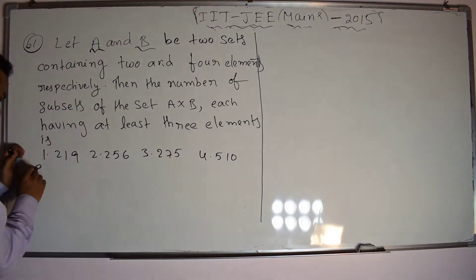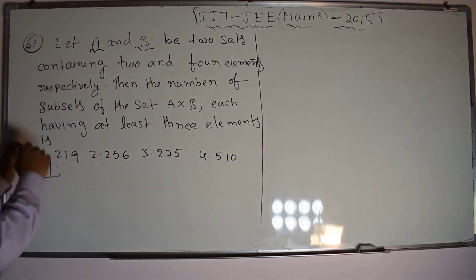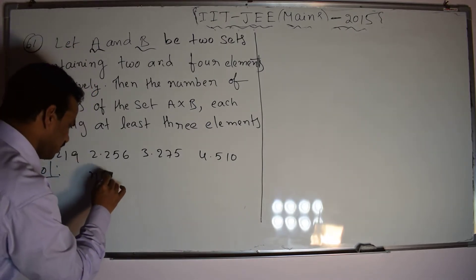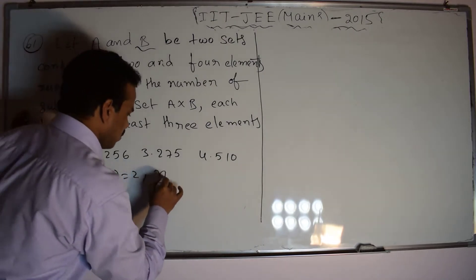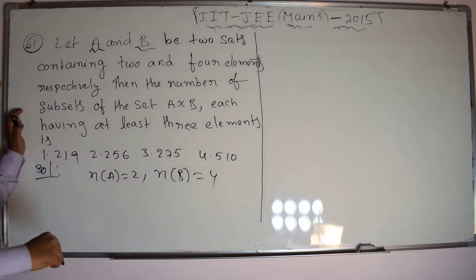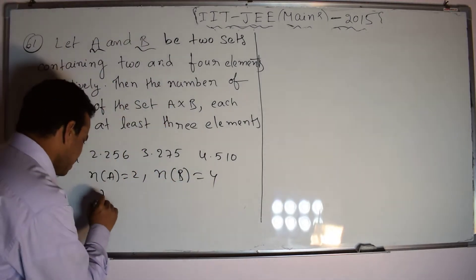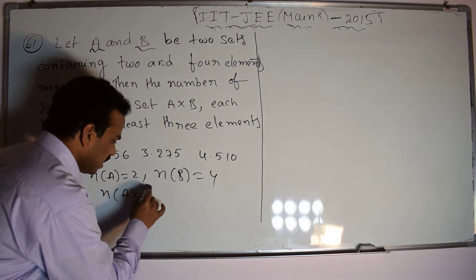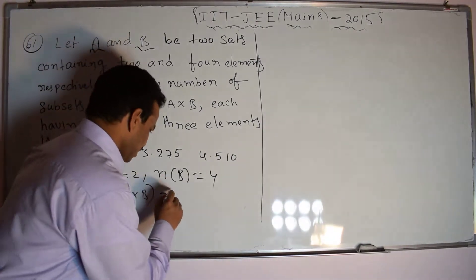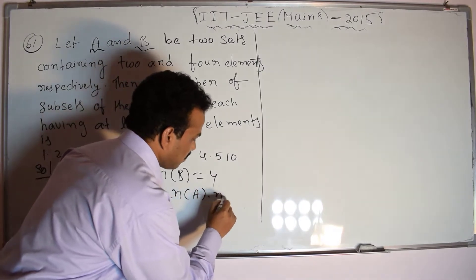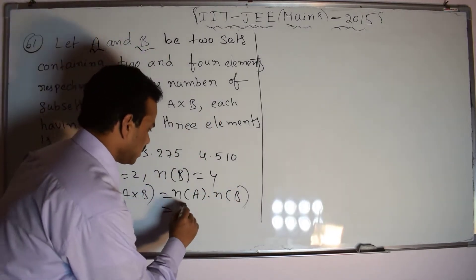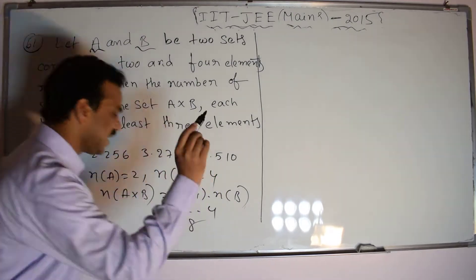Solution. The information provided: the number of elements in A — N(A) equals 2, and N(B) equals 4. We want the total number of elements in A cross B. N(A cross B) equals N(A) into N(B), which is 2 into 4, equals 8.